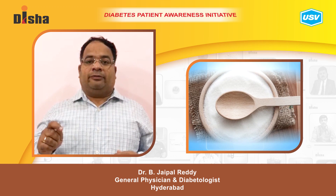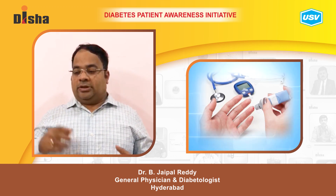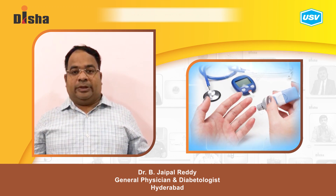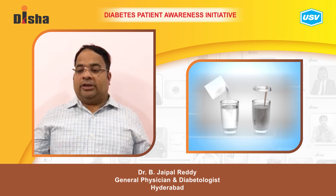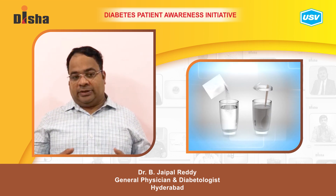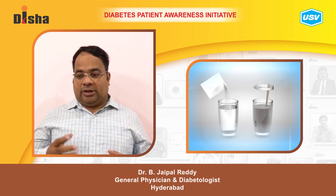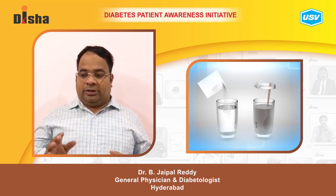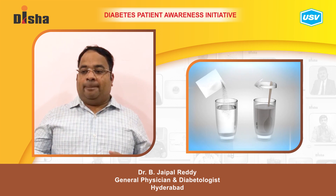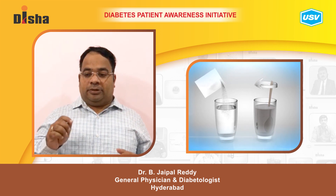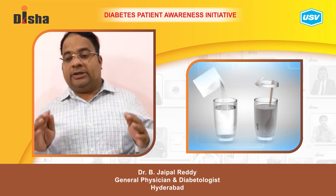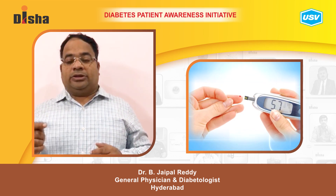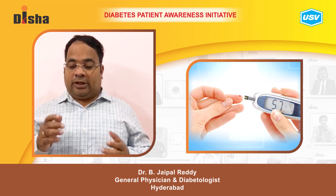In the Rule of 15, you give 15 grams of glucose and check blood glucose after 15 minutes. If it is normal, that is fine; otherwise, give 15 grams again. When treated properly, the patient regains consciousness very soon. You must also recheck glucose even after levels return to normal.